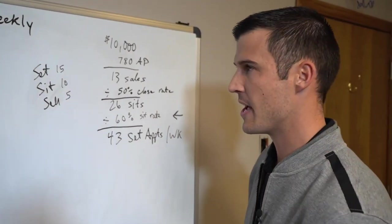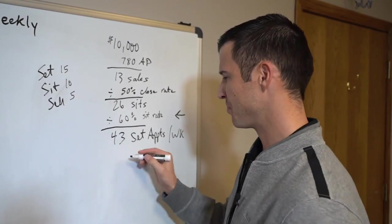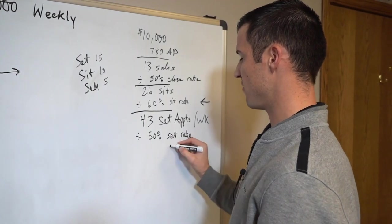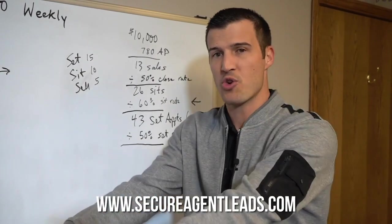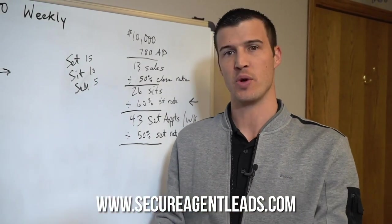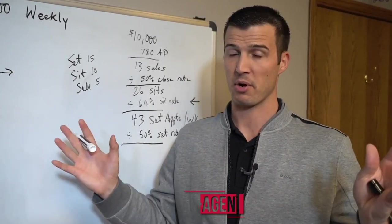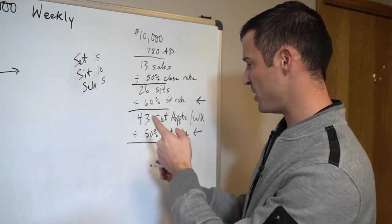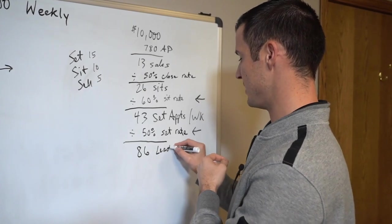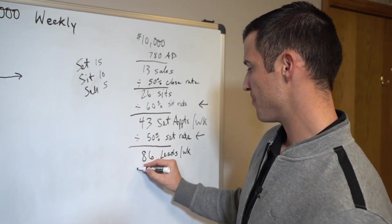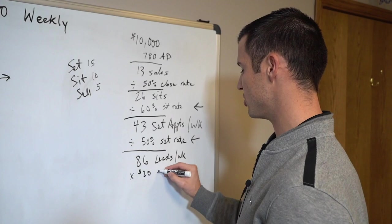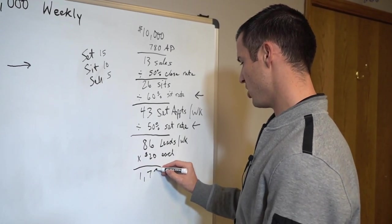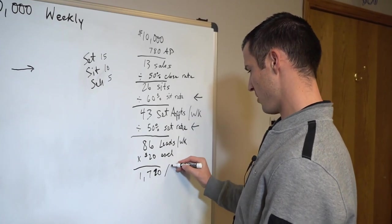Now let's just say that you get some good solid leads and you actually have a 50% set rate, especially if you're working our leads. We're exclusive, they come in real time, they're fast, we drive inbound calls to you, we actually set up automated processes to get you an automated appointment set. There's some different things we're doing, it's freaking crazy. You may want to call in 833-40-AGENT. So with a 50% set rate, that means you would need 86 leads per week. Now let's just say those leads are about $1,720 each. In that example, we're at about $1,720 per week in real money.